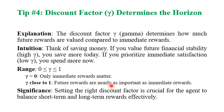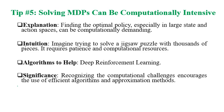When gamma is close to zero, we only pay attention to immediate reward. When gamma is close to one, we pay attention to future reward. This shapes one of the key advantages of reinforcement learning — having a long-term goal. Setting the right discount factor is crucial for the agent to balance short-term and long-term rewards effectively.